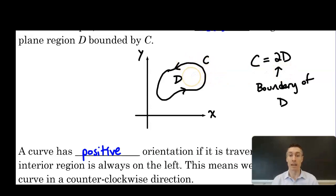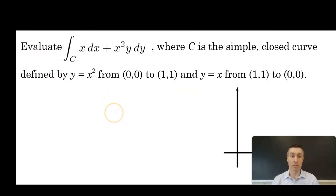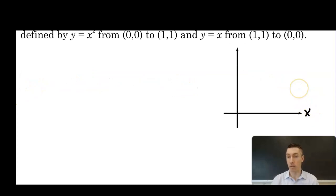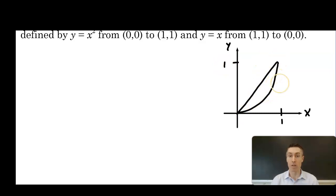We want a closed curve with an interior region and positive orientation — in this case, moving counterclockwise. Before applying Green's Theorem, let's evaluate the line integral of a vector field over a closed curve directly. Evaluate the integral along C of x dx plus x² y dy, where C is the simple closed curve defined by y = x² from (0,0) to (1,1), and y = x from (1,1) to (0,0). Drawing this on the xy-plane, we have part of a parabola and a line segment.